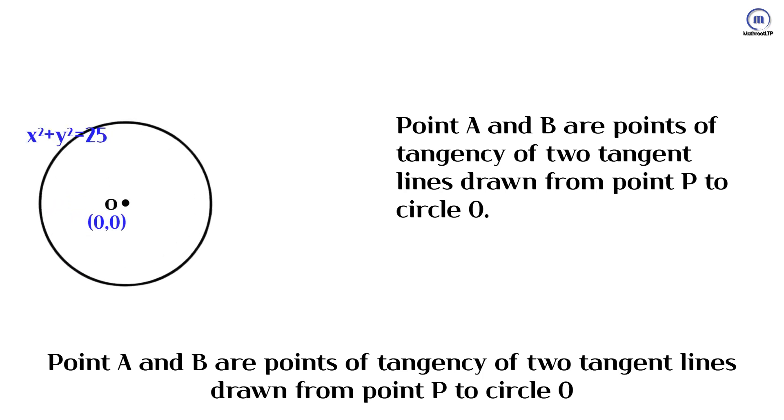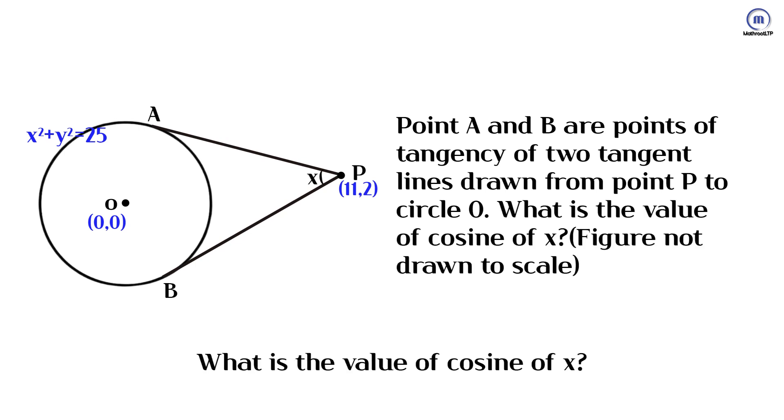Point A and B are points of tangency of two tangent lines drawn from point P to circle O. What is the value of cosine of X?